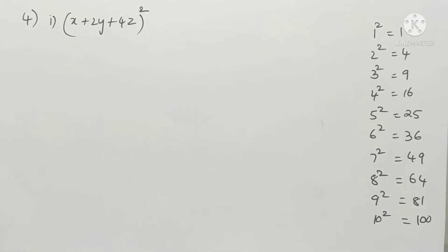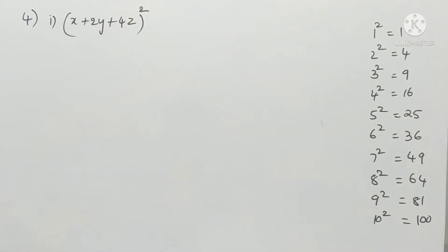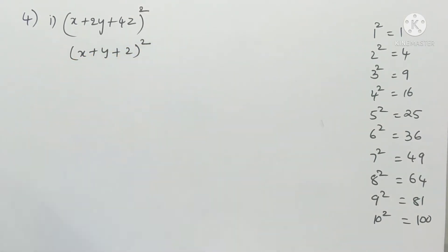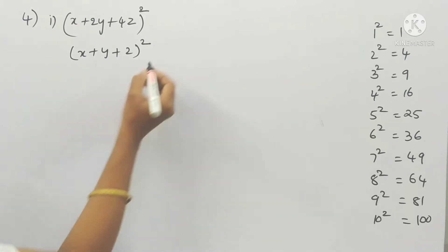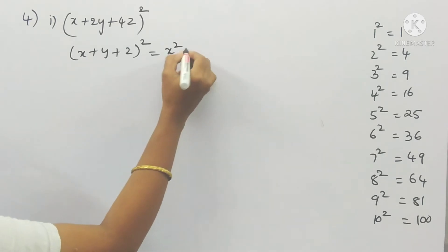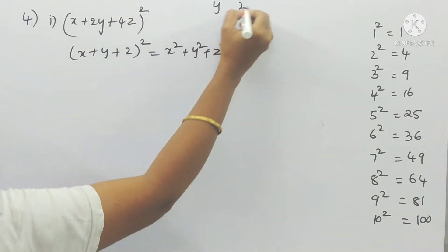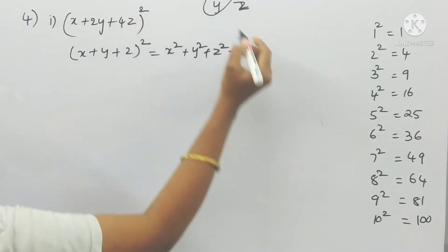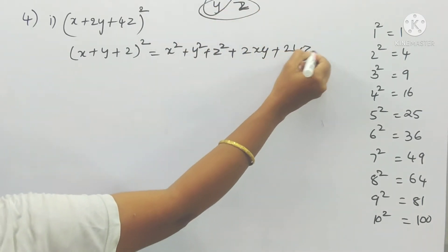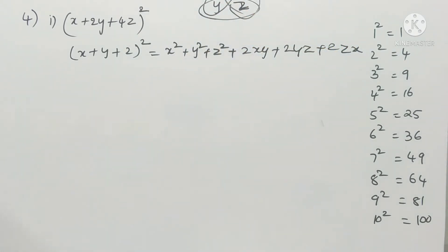The first one: (x + 2y + 4z)². In this model we have the algebraic identity (x + y + z)². The formula gives: x² + y² + z² + 2xy + 2yz + 2zx. This is our identity.